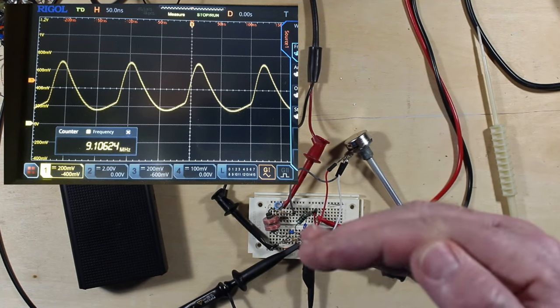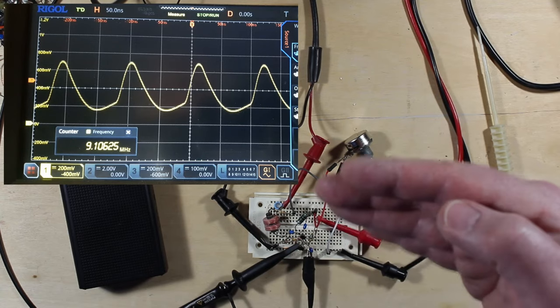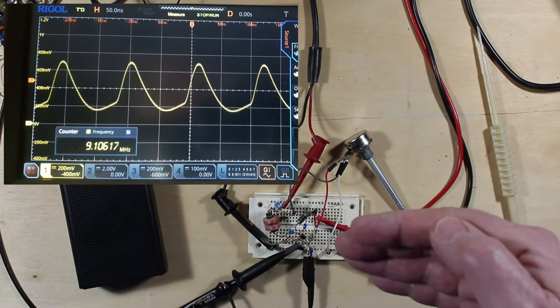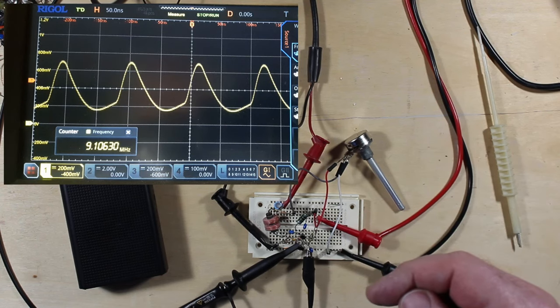In other words, we can modulate what the frequency is, or FM radio. We can frequency modulate it by putting a small control voltage into there, and it will change the frequency of our oscillator back and forth.